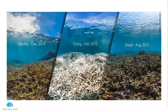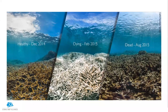Lest you get lulled into thinking it takes 30 years for a reef to die, here are data showing that's not always the case. Photographs from the Catlin Sea View Survey show a healthy reef in December 2014, a bleached reef in February 2015, and that same reef dead by August. Bleaching happens when water gets too warm for too long and corals expel their symbiotic algae — the zooxanthellae — which provide food. If the warm water event goes on too long, corals starve and can die. Corals can recover from bleaching, but the longer the event, the less likely that recovery is.